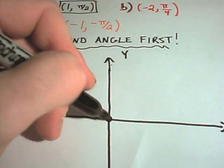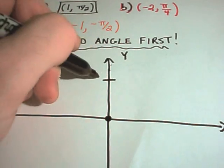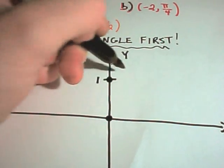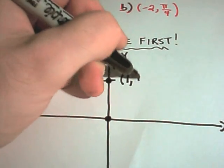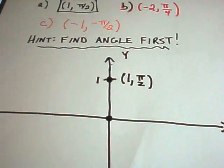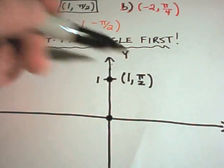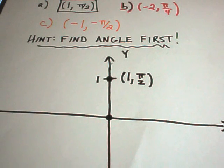And then basically you just think, I need to go out a distance of 1. We'll just arbitrarily choose that to be 1. This would be the point 1, pi over 2 in polar coordinates. You found an angle of pi over 2, and you've got a radius of 1.